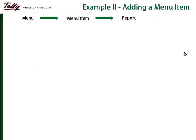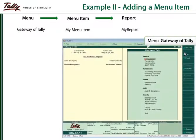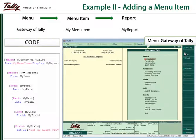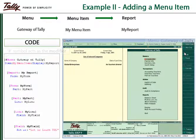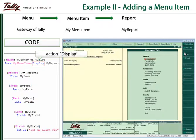Let us see how to write a TDL program to modify a menu by adding a menu item which displays a report. The attribute 'item' is used to provide the name of the item to be added to the menu. This is followed by the action 'display', and the name of the report to be displayed is specified as the parameter for that action.